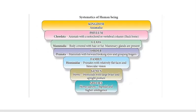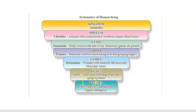For example, in this diagram, we show that kingdom is at the top level, and after that phylum, then class, next order, family, genus, and species. So in this diagram, we see that kingdom is at the highest level while species is at the lowest level.